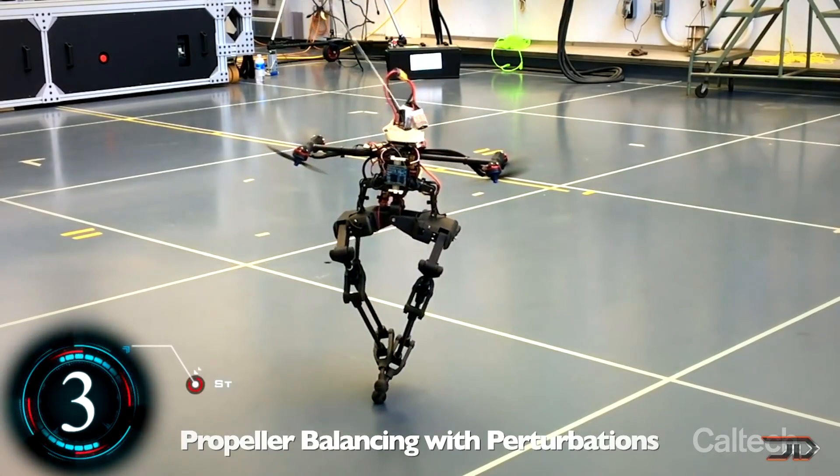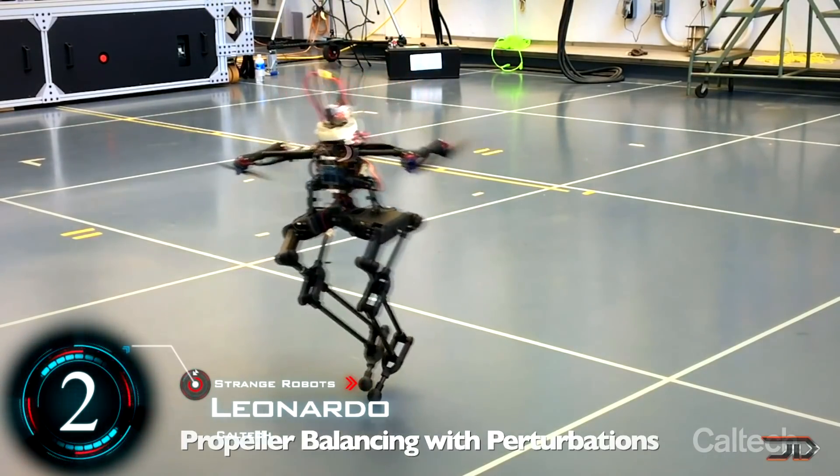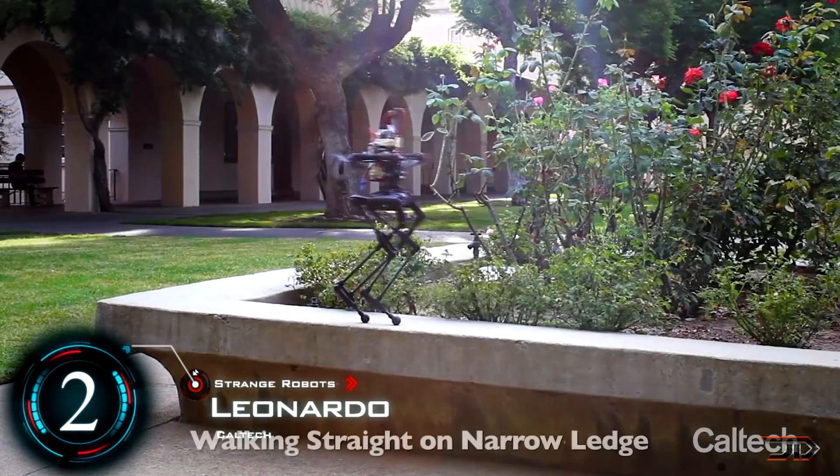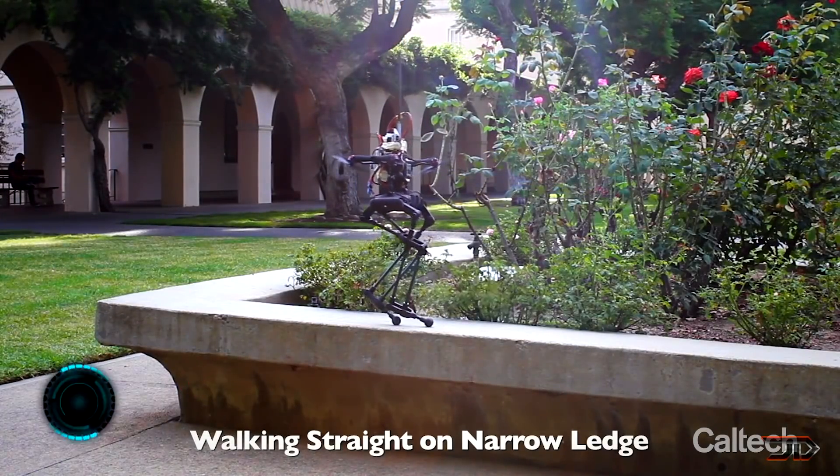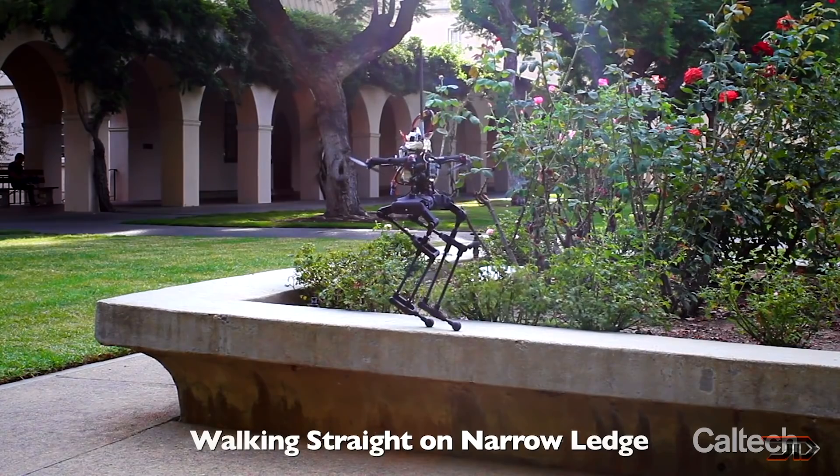Now we get to number 2, and it's called the Leonardo. Quite a few weird bipedal robots exist now, but this one just takes it to a whole different level. At 2.5 feet tall, the robot looks like a mini droid.